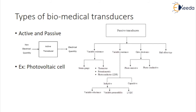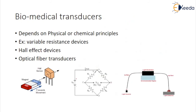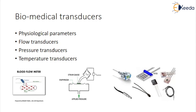Have you understood the concept of active and passive? Then we will switch. Again, transducers are subdivided depending on physical or chemical principles — for example, variable resistance devices, Hall effect devices, and optical fiber transducers. For measuring some physiological parameters, we use flow transducers, pressure transducers, and temperature transducers.